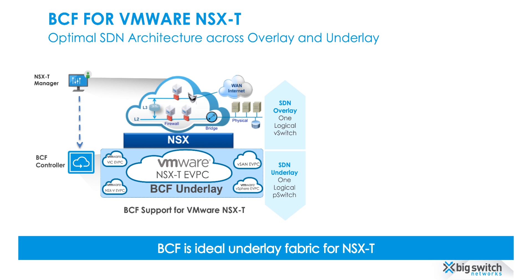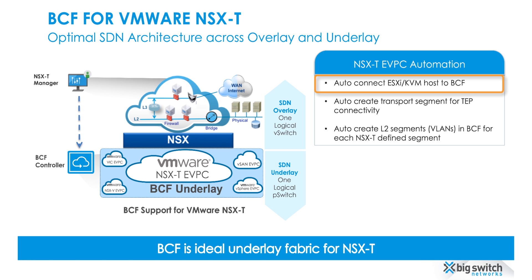Using BCF with NSX-T enables you to have an optimal SDN architecture for both overlay and underlay. With eVPC automation, BCF will auto-detect your ESXi or KVM transport nodes as soon as they are physically connected to any port in the fabric. BCF will also auto-create static or LACP MLAGs based on the uplink profile selected for these nodes. For all the overlay logical switches, BCF will auto-provision the transport network in the fabric, thus allowing the Geneve tunnels to be created instantaneously without any manual configuration.